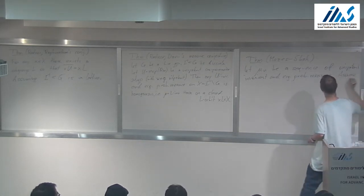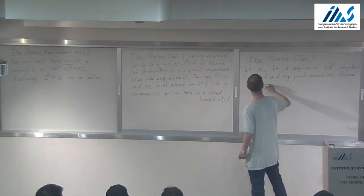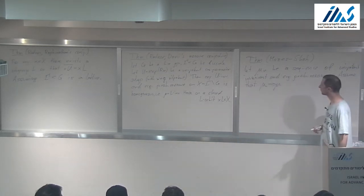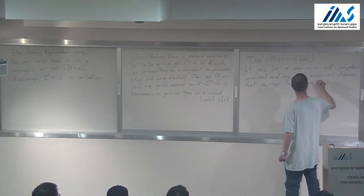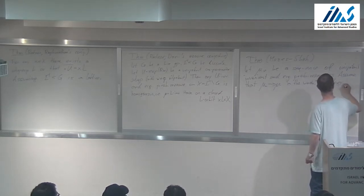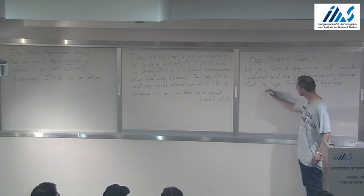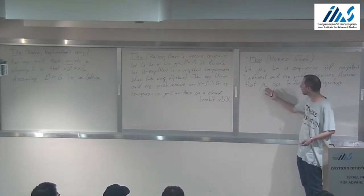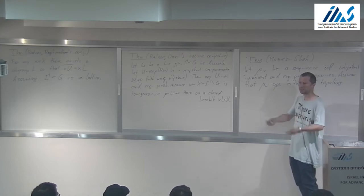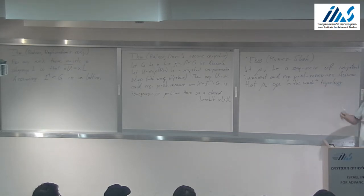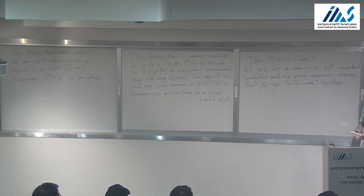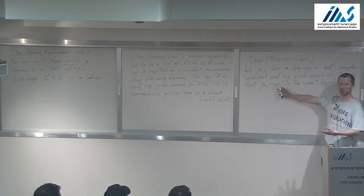Assume that mu_n converges to mu in the weak-star topology. This is without loss of generality because the space of probability measures should be weak-star compact — it is if X is compact. If X is not compact, you take the space of measures that are probability-or-less, which is compact. I'm not saying that mu is a probability measure.